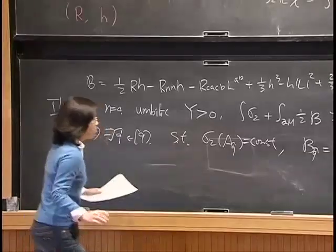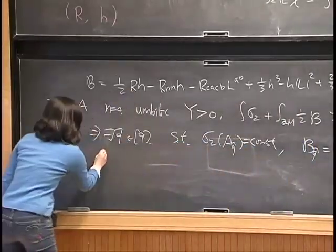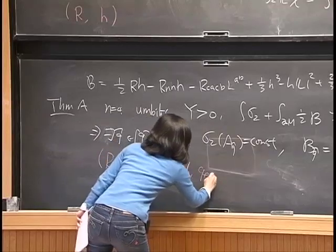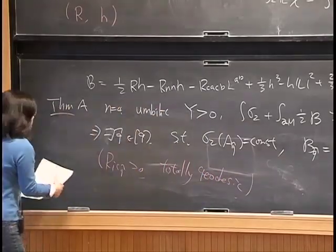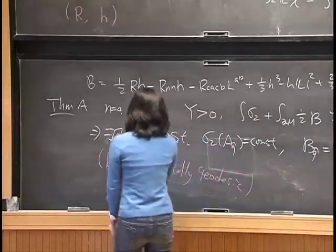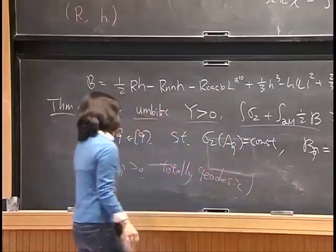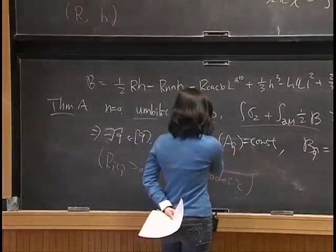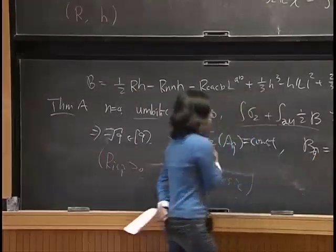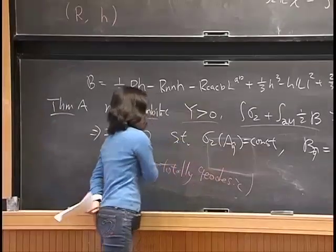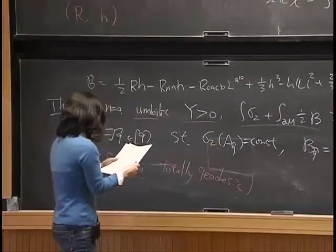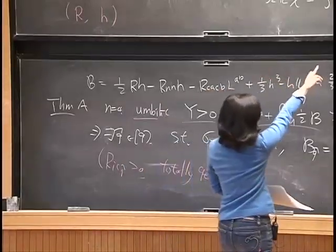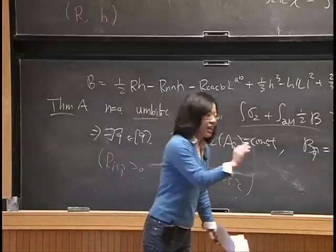This implies the Ricci curvature is positive and the boundary is totally geodesic. The conditions here are all conformally invariant, making it a classification problem. To find a good metric with sigma-2 curvature a positive constant and B2 equal to zero on the boundary, in this case it turns out to be totally geodesic. The term B in the boundary condition comes from a divergence structure because it must be a conformal invariant, though it is not unique — I will explain this later.